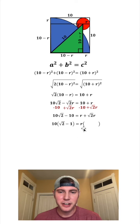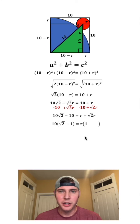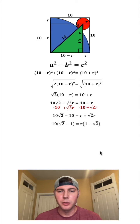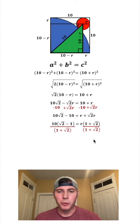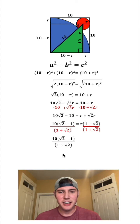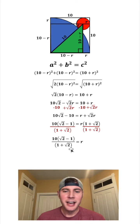On the right-hand side, we can factor out the R: R times 1 gives us R, and R times √2 gives us √2·R, so we have R(1 plus √2). Now R is almost by itself — we can divide both sides by (1 plus √2). The right-hand side is just R, and we've solved for R: R = 10(√2 minus 1) / (1 plus √2).